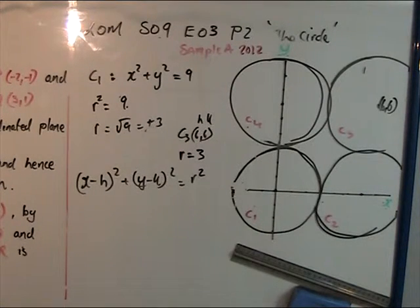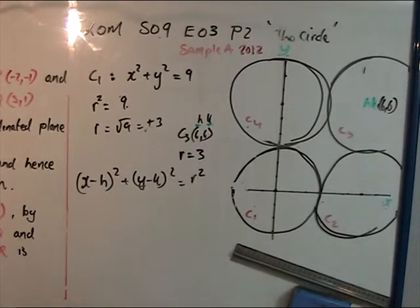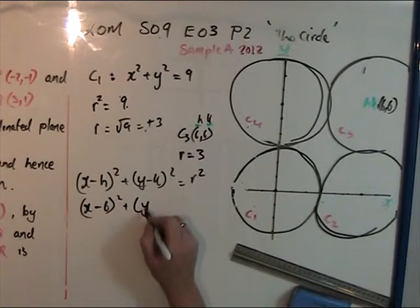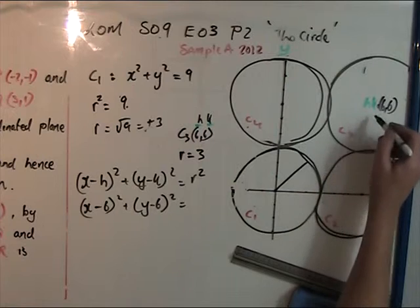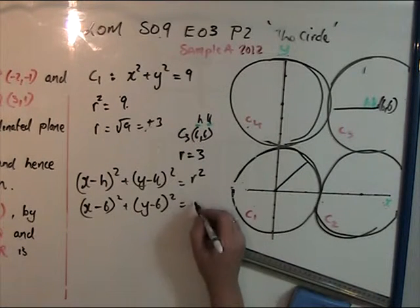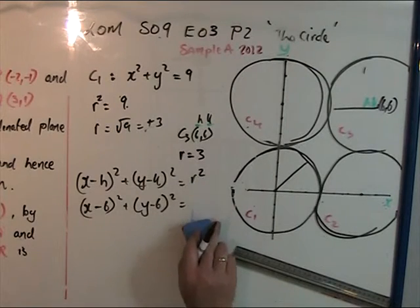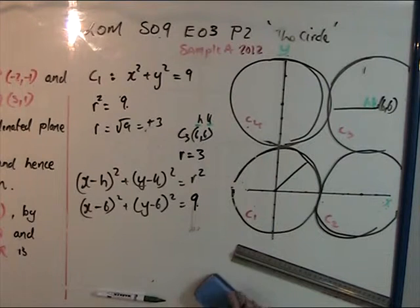Substituting the values: (x - 6)² + (y - 6)² equals r². The radius doesn't change, so it equals 3² which equals 9. That's the equation of C3.